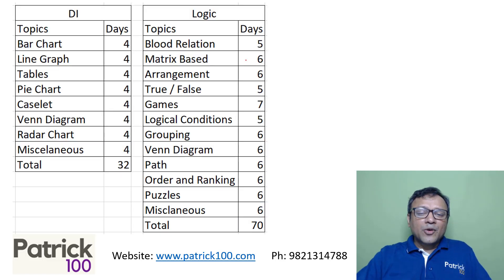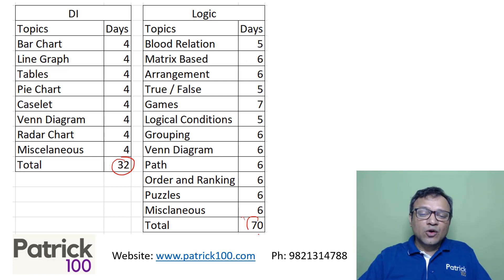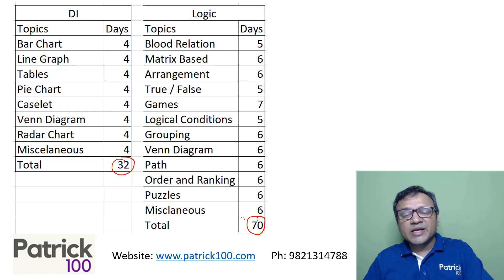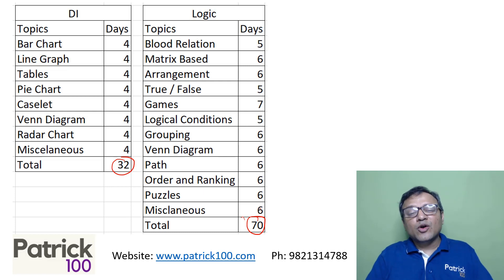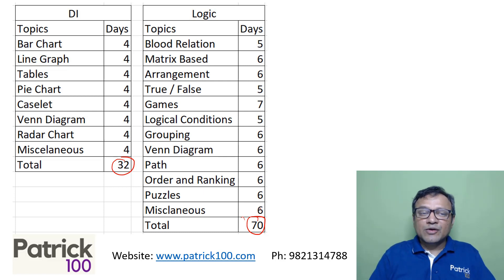I have given approximately a breakup of the 102 days: 32 days for DLR and 70 days for logic. CAT is more of a logic-based exam, so I have given more days for logic and fewer days for DLR.